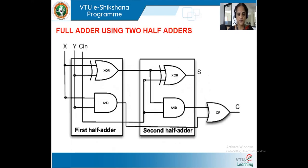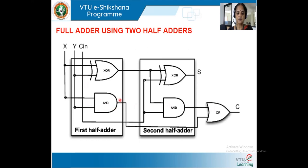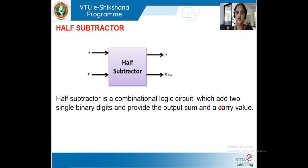A full adder can also be designed using two half adders. The output of the first half adder connects to the input of the second half adder, and C_in connects directly to the other input of the second half adder. The sum of all three inputs is generated. For carry out, the C_out of the first half adder and the C_out of the second half adder are connected to the inputs of an OR gate to generate the final carry.